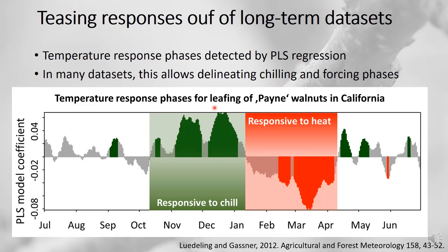We see clusters of high positive model coefficients that are flagged as important by additional tests. The ones that are positive and significant are shown in dark green. We also have coefficients that are negative and significant, shown in dark red. The positive ones indicate that high temperatures in that particular period are correlated with a late bloom date, while high temperatures in the red period are related to an early bloom date.